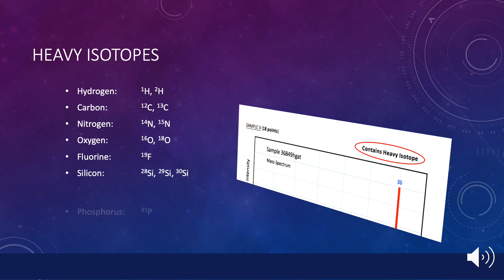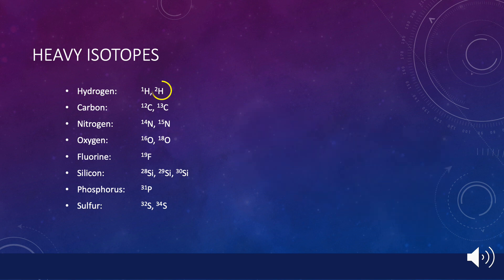The most common mass value is the first one listed in each case. All compounds in this exercise will be made from this small handful of isotopes. The easiest heavy isotope to recognize is the hydrogen isotope with mass 2, also called deuterium.